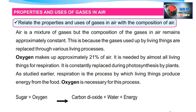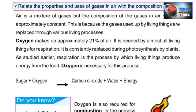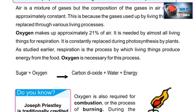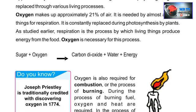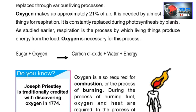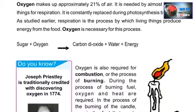Oxygen makes up approximately 21% of air. It is needed by almost all living things for respiration, and it is consistently replaced during photosynthesis by plants. Respiration is the process by which living things produce energy from food. The reaction is: sugar plus oxygen gives carbon dioxide plus water plus energy.